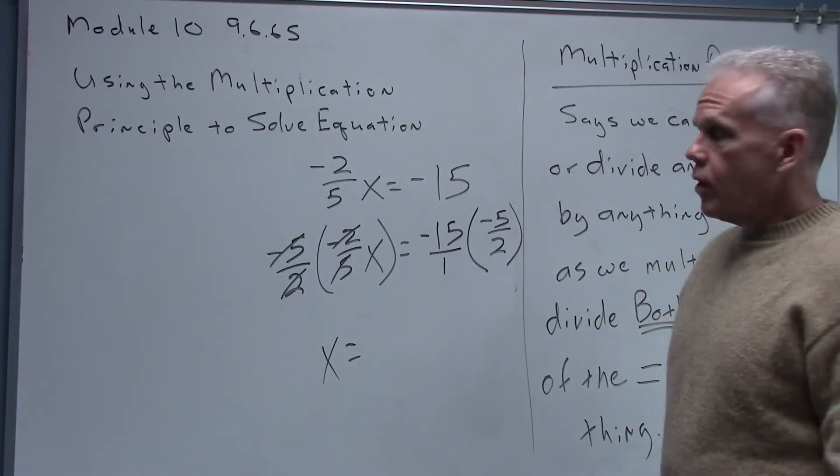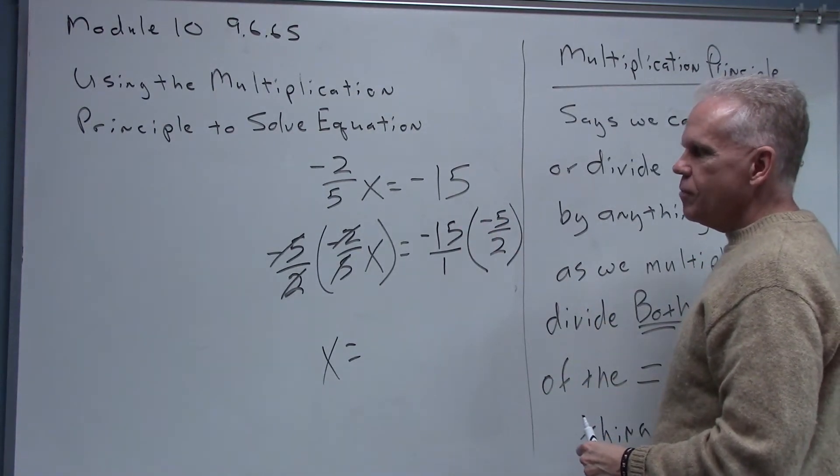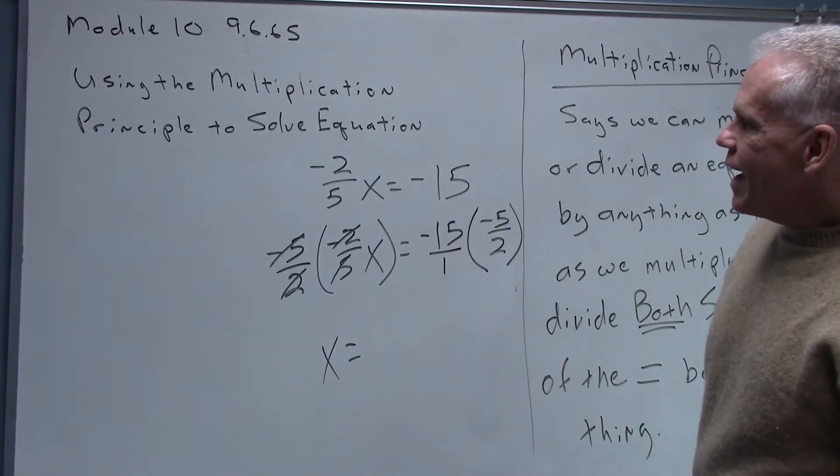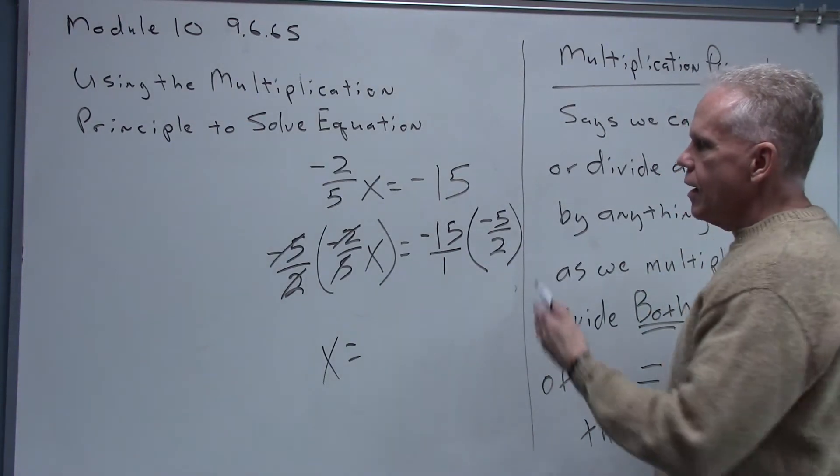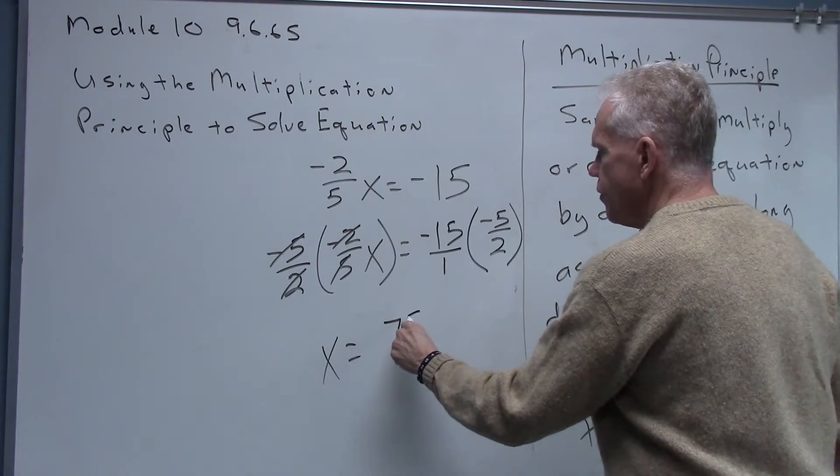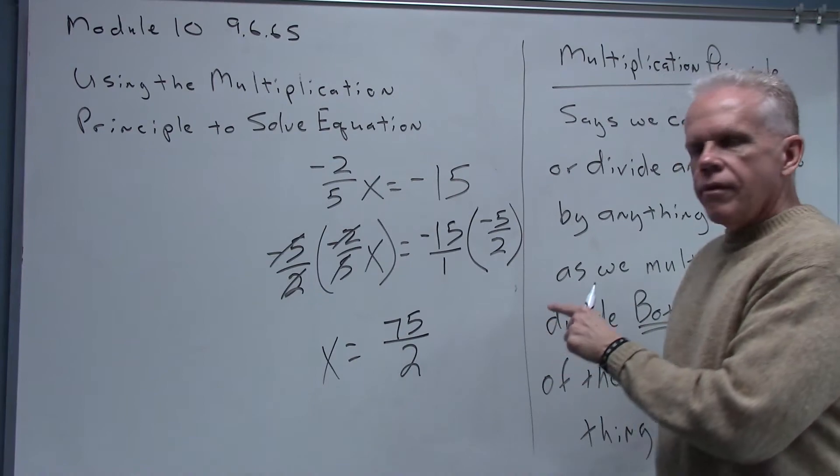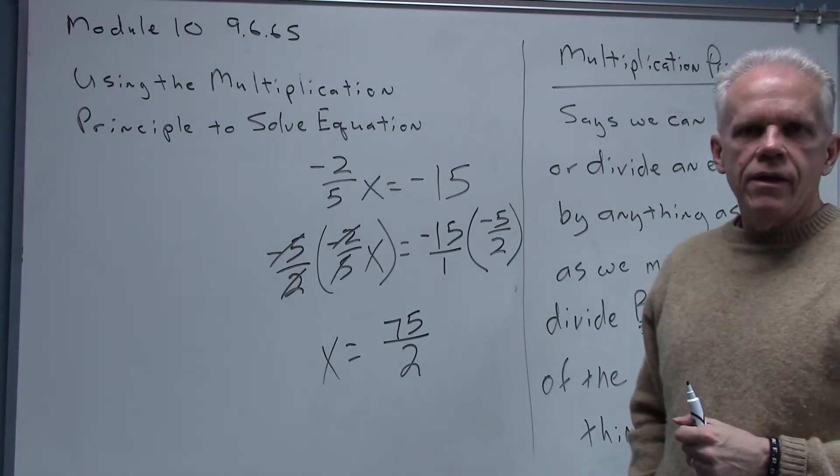So I just got to work this out. I'll multiply straight across here. Negative fifteen times negative five. Now a negative times a negative is going to be a positive. Fifteen times five is actually going to work out to be seventy-five, and then one times two is two. Now that is a simplified fraction, seventy-five over two is a simplified fraction.